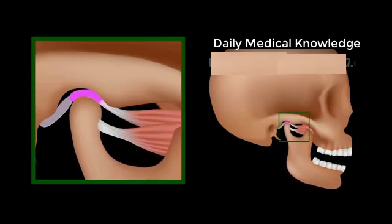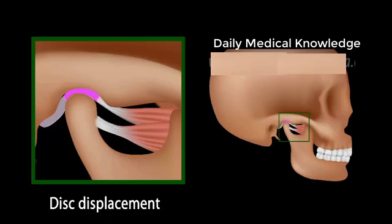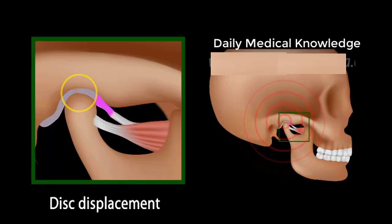The most common disorder of the TMJ is disc displacement, and in most cases the disc is dislocated anteriorly. As the disc moves forward, the retrodiscal tissue is pulled in between the two bones. This can be very painful as this tissue is fully vascular and innervated, unlike the disc.